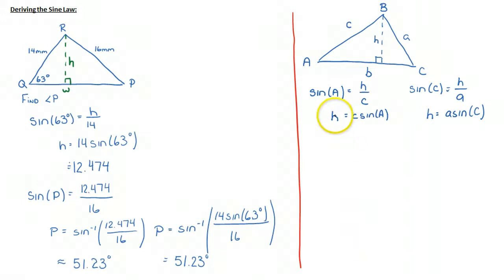And the observation we want to make at this point is that this h is the same in both cases. So therefore, what we can say is that c sine a is equal to a sine c. And what we often do at this point is rewrite it in this format. We divide both sides by sine a. So those cancel out. So I end up with c is equal to a sine c over sine a.